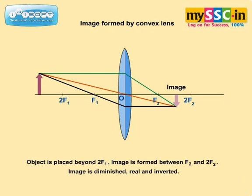When the object is placed beyond 2F1, the image is formed between F2 and 2F2. The image is diminished, real, and inverted.